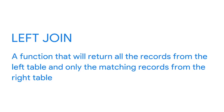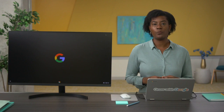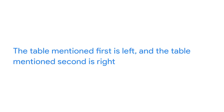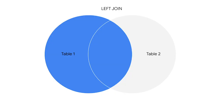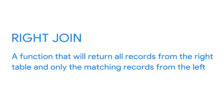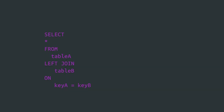When you input JOIN into SQL, it usually defaults to inner join, so analysts often use JOIN as shorthand. A left join returns all the records from the left table and only the matching records from the right table. The table mentioned first is left and the table mentioned second is right. In the Venn diagram, the entire left table is colored in along with the overlap. Right join does the opposite — it returns all records from the right table and only matching records from the left. You can get the same results if you flip the order of the tables and use a left join.